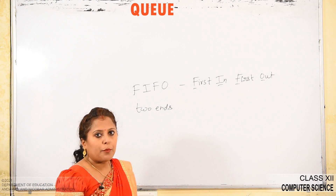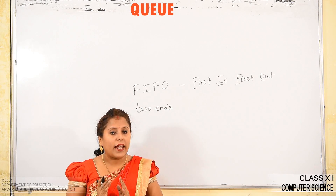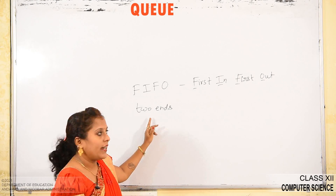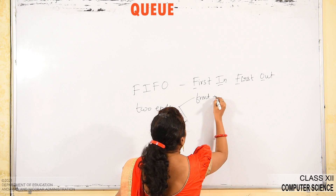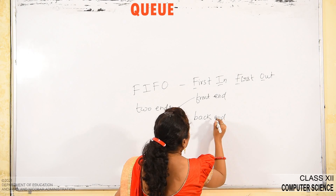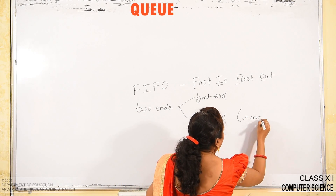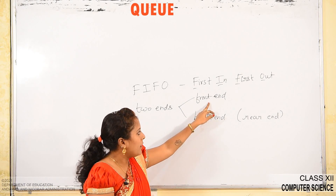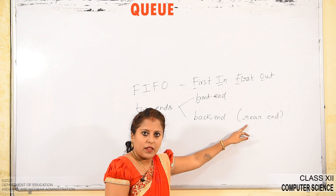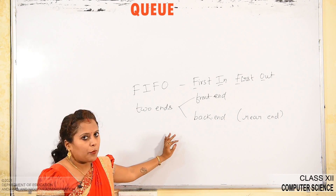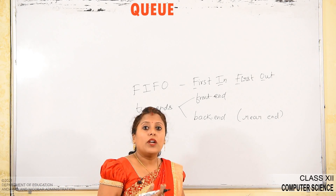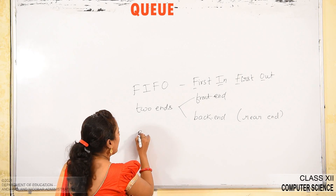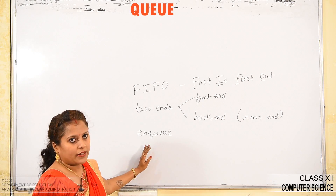In stack, both insertion and deletion were performed at one end called the top of the stack. But in queue, we have two ends: one is the front end and another one is the back end, also called the rear end. These are the two ends of a queue.